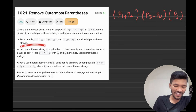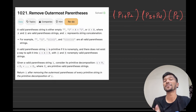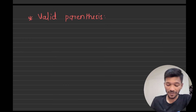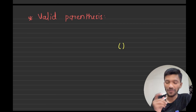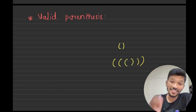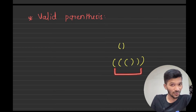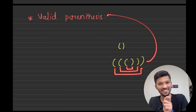In the question, they will give us a valid parenthesis string. What do we mean by valid parenthesis? Valid parenthesis means that for every opening bracket, there is always one closing bracket. For example, this string is valid because for each opening bracket I have a corresponding closing bracket — therefore this is a valid parenthesis string.